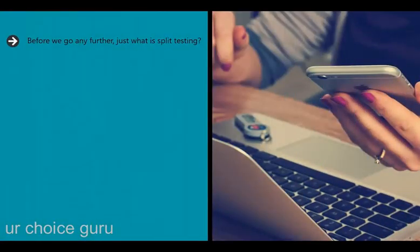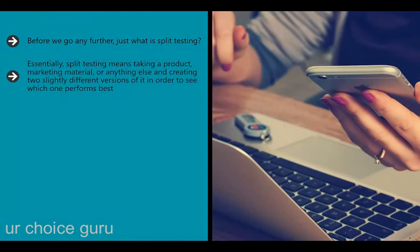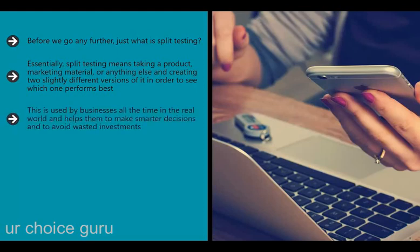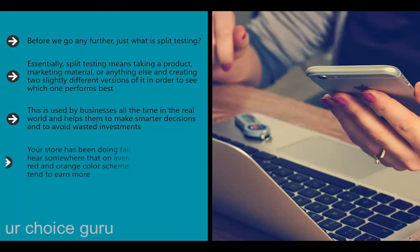Just what is split testing and what does the term mean in the context of search engine optimization? Essentially, split testing means taking a product, marketing material, or anything else and creating two slightly different versions of it in order to see which one performs best. This is used by businesses all the time in the real world and helps them to make smarter decisions and to avoid wasted investments.